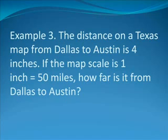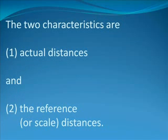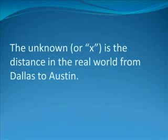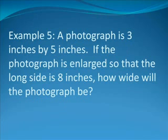Example number three: The distance on a Texas map from Dallas to Austin is 4 inches. If the map scale is 1 inch equals 50 miles, how far is it from Dallas to Austin? The two things being compared are the real world and a map. The two characteristics are actual distances and the reference or scale distance. The unknown is the distance in the real world from Dallas to Austin. This is how the tic-tac-toe board should be filled out.